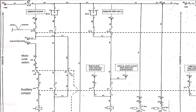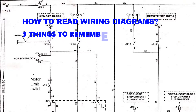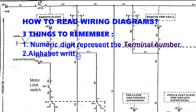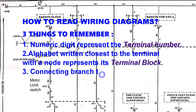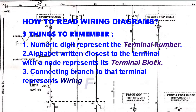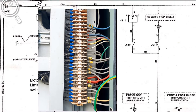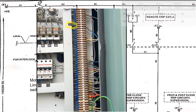Let us start and closely look at the top left of this network diagram. Always remember three things. First, the numeric digit shown always represents the terminal. Second, the alphabet written closest to the numeric digit represents the terminal block. And last, the connecting branch of the network represents the wiring ferrule. From this, we can say that DC positive is given on terminal 1 of the X1 terminal block having wiring ferrule J1.